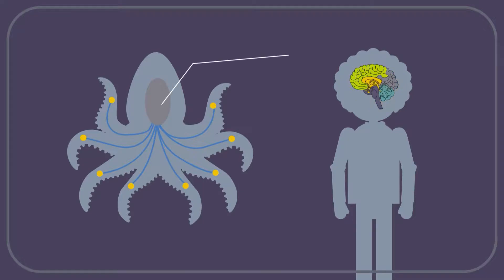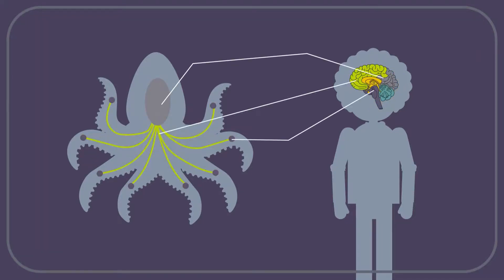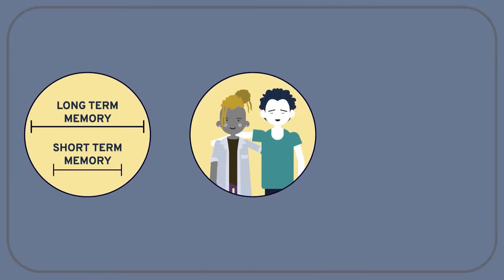But one picture that emerges is that they still have certain parts of their anatomy devoted to tasks that we perform. For example, parts to do with short and long-term memory, recognizing individuals, and play.